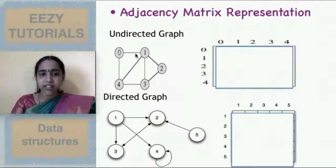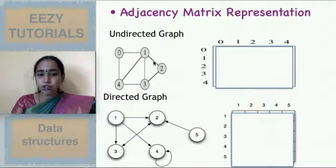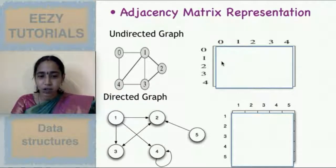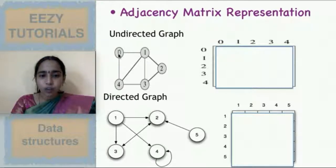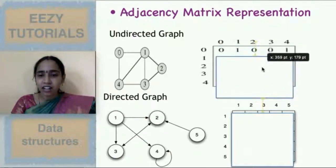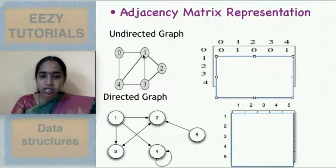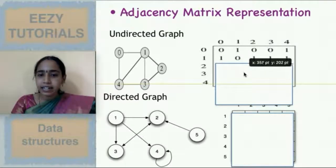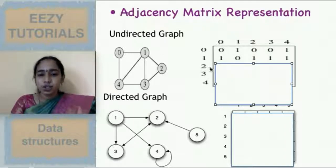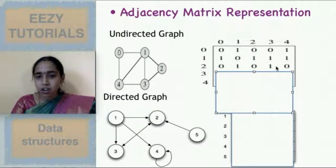Let us see an example with an undirected graph. Consider this undirected graph — we are going to form an adjacency matrix for it. You are having vertices 0 to 4, so 0 to 4 are the row and column indices. There are no self-loops, so all diagonal entries are 0. For row 0, edges go to vertices 1 and 4, so those entries are 1 and all others are 0. For vertex 1, edges go to 0, 2, 3, and 4, so all entries except the diagonal are 1. For vertex 2, edges go to 1 and 3 only.